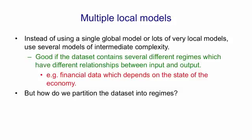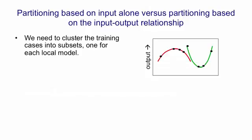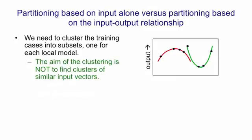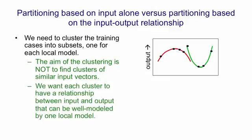So we have this problem, if we're going to use different models for different regimes, of how do we partition the data set into these different regimes. In order to fit different models to different regimes, we need to cluster the training data into subsets, one for each of these regimes. But we don't want to cluster the data based on the similarity of input vectors. What we're interested in is the similarity of input-output mappings.